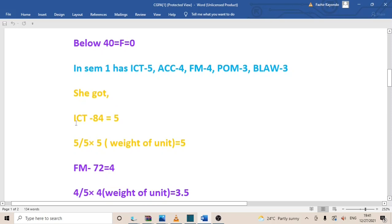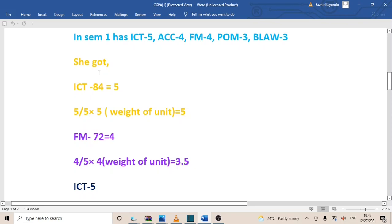Taking an assumption that she had gotten in ICT an 84, which is equal to an A, a 5, meaning if I want to calculate her weight effect, it's going to be 5 out of 5 times 5. Now this 5 is the total weight, and the 5 is the score she got out of the total grade of 5, whereby 80 plus is equal to 5. So if I told she had gotten 72 in FM, meaning that to get to know her weight effect, it's going to be 4 out of the total, which is 5, times 4. 4 is the total weight.